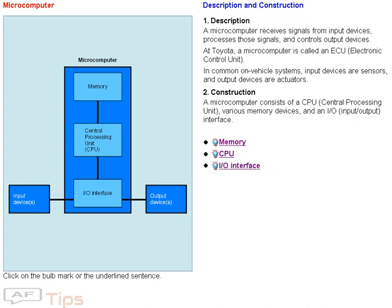A microcomputer receives signals from input devices, processes those signals, and controls output devices. At Toyota, a microcomputer is called an ECU. In common on-vehicle systems, input devices are sensors, and output devices are actuators.